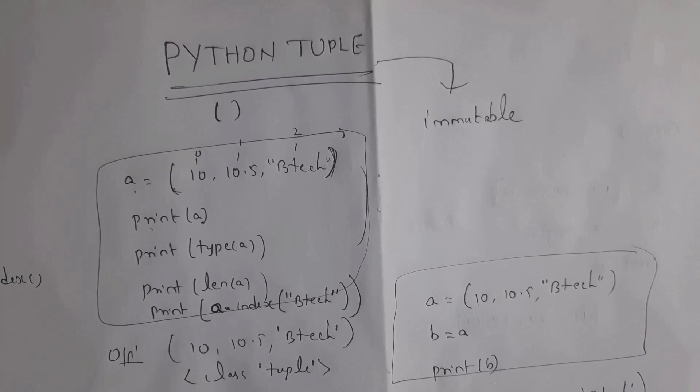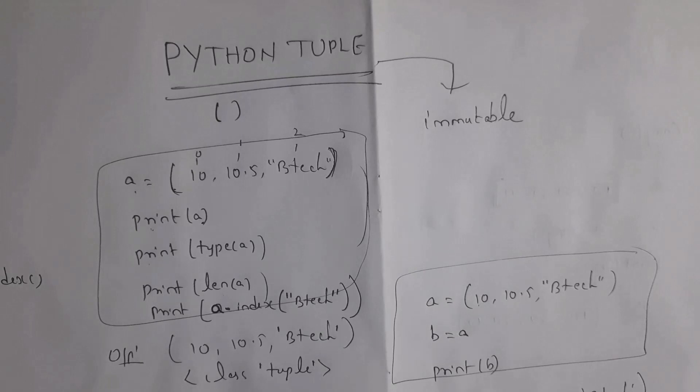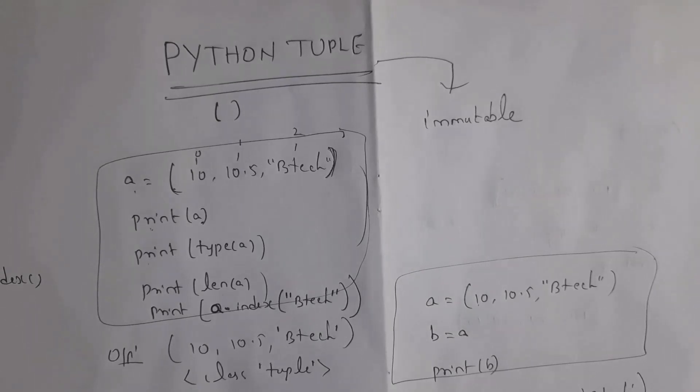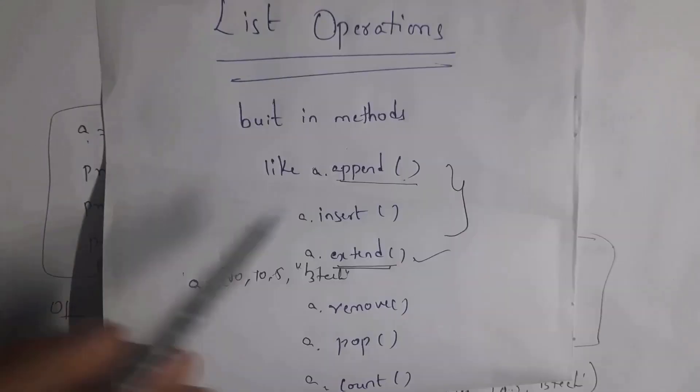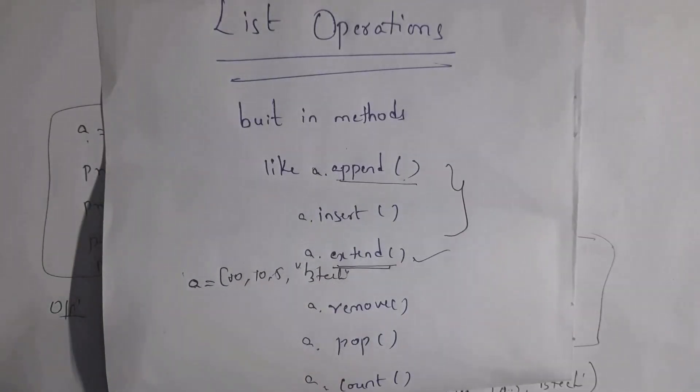But Python tuple is immutable. Immutable means you cannot perform any modifications once we create tuple. We cannot add items, we cannot modify items, or we cannot remove particular items. Once we create any tuple, we cannot perform any of these operations on Python tuple because Python tuple is immutable.